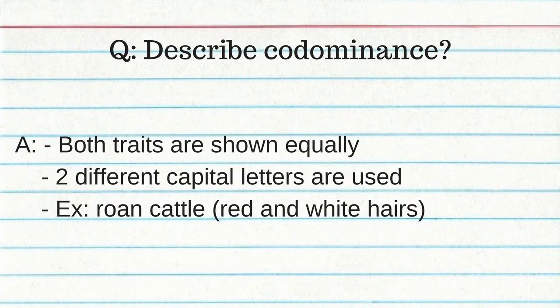What are three types of dominance? Complete dominance (Mendel's dominance), co-dominance, and incomplete dominance. Co-dominance: both traits are shown equally — two different capital letters are used. An example is roan cattle, which has red and white hair. The cattle isn't pink — it has little red hairs and little white hairs, so both are shown.